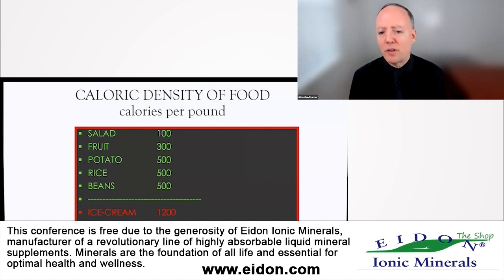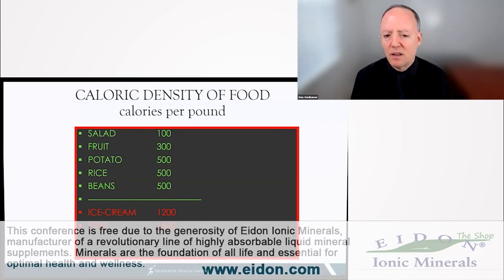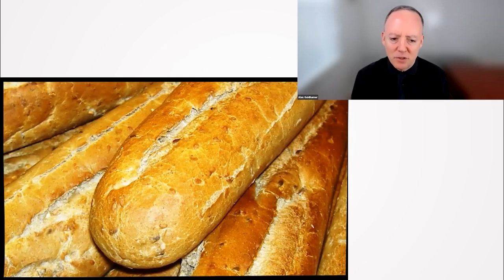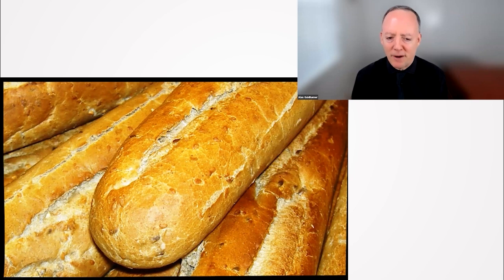What if we invented a food with a higher caloric density than ice cream? What if it had 1,500 calories a pound instead of 1,200 calories a pound? Do you think people would like it? Do you think people would call it the staff of life? Because sure enough, bread, with crunchy outside and soft inside, has 1,500 calories per pound. Higher caloric density than ice cream. And that's before you melt coagulated cow pus all over it and turn it into a grilled cheese.